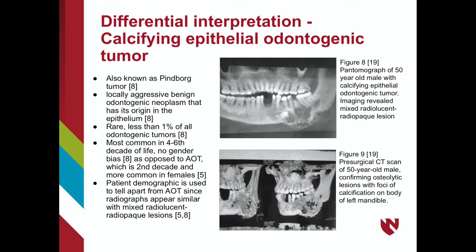As shown in the figures, a 50-year-old male presented to the oral and maxillofacial surgeon with pain and swelling in the body of the left side of the mandible. The lesion had progressively increased in size over 2 years, leading to facial asymmetry. The pantomograph revealed a mixed radiolucent-radiopaque lesion indicating either an adenomatoid odontogenic tumor or a calcifying epithelial odontogenic tumor. The lesion was confirmed in the presurgical CT scan as a calcifying epithelial odontogenic tumor due to the presence of an osteolytic lesion with foci of calcifications. Patient demographics allow differential diagnosis since radiographically it is hard to distinguish between the two.